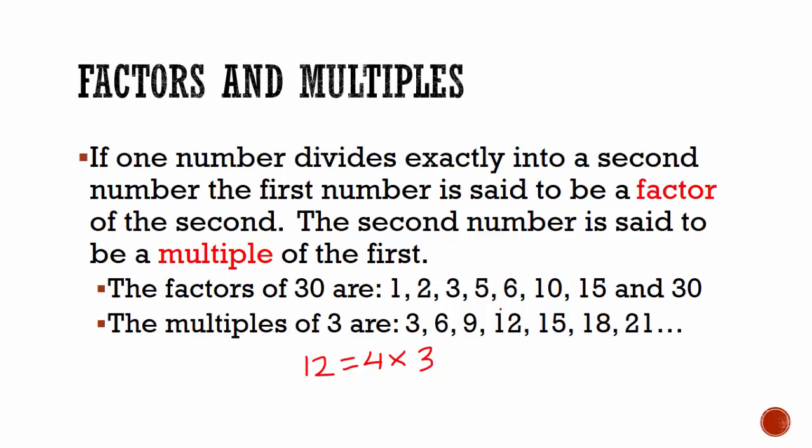On the other hand, looking at multiples. 3 multiplied by 1 is equal to 3. 3 is a multiple of 3. Every number is a multiple of itself. 6 is 3 multiplied by 2, that's a multiple. 9 is 3 multiplied by 3, that's a multiple, and so on.